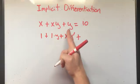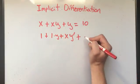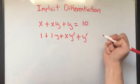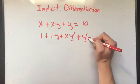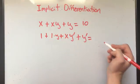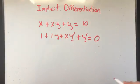Plus, and I take the derivative of y — I just said the derivative of y was y prime — equals the derivative of 10. The derivative of a constant is 0.